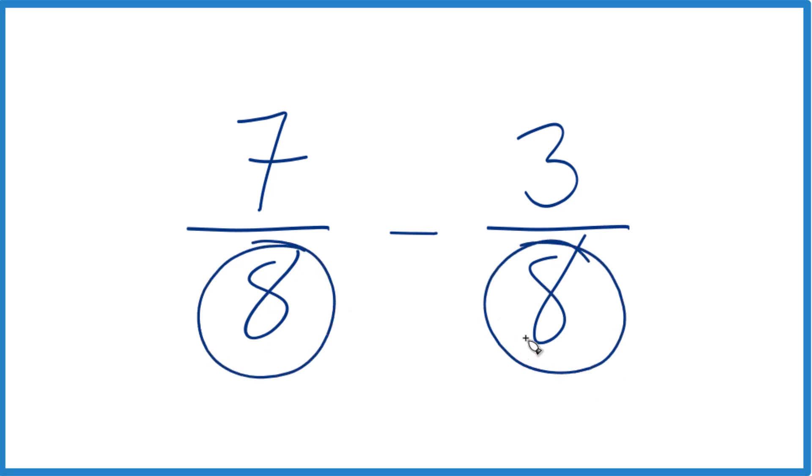That's this number down here. We want that to be the same. And in this case, it is. We have 8 for both of these. That makes it a lot easier.